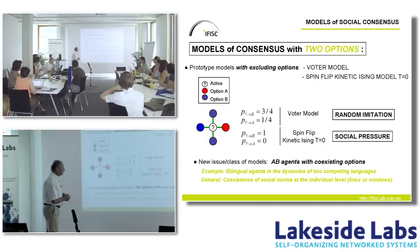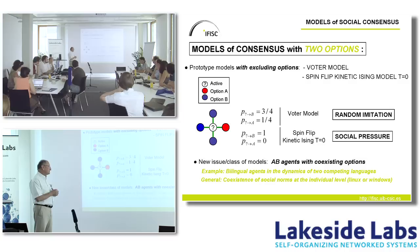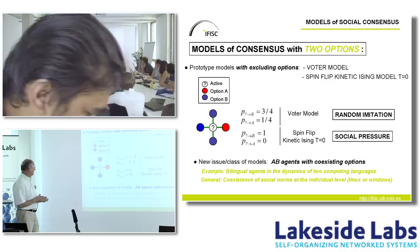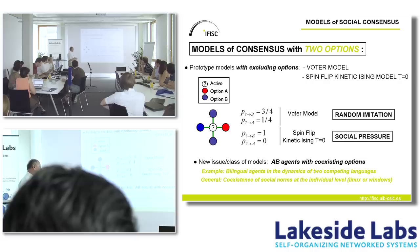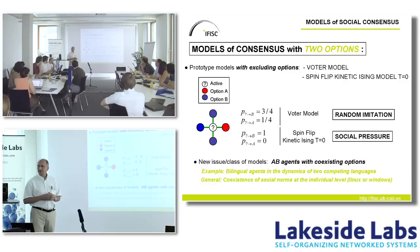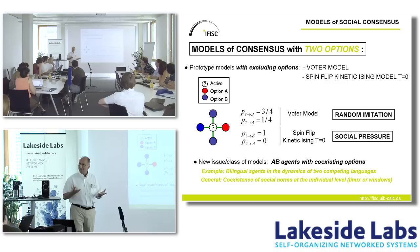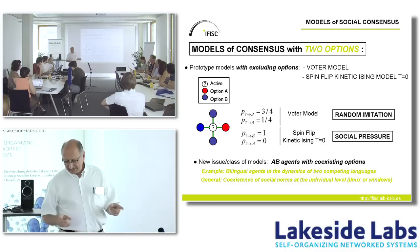There are models in which agents at the individual level can have co-existing options — not either A or B, but A and B. This has been used for bilingual agents in competing languages, but I'm sure someone here has both Linux and Windows on their laptop. The competition and influence of agents playing two roles simultaneously is also interesting.